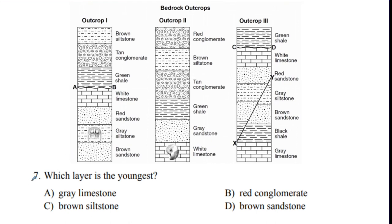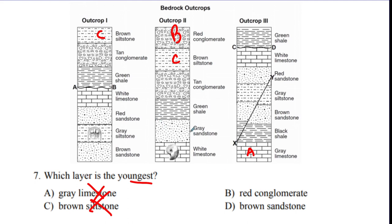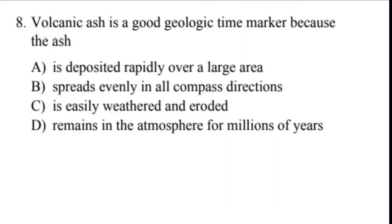Question seven: which layer is the youngest? Looking at the four choices — gray limestone is all the way at the bottom, so it's out. Red conglomerate is on top of brown siltstone. Brown sandstone is way underneath siltstone, which is underneath red conglomerate. So red conglomerate is the youngest. The answer is B.